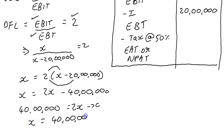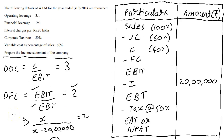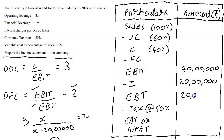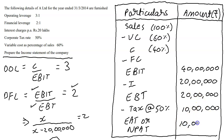Now that EBIT = 40 lakhs, it's easy to solve downwards. Subtracting interest: EBT = 40 − 20 = 20 lakhs. Applying 50% tax on 20 lakhs gives tax = 10 lakhs, and earnings after tax = 20 − 10 = 10 lakhs.